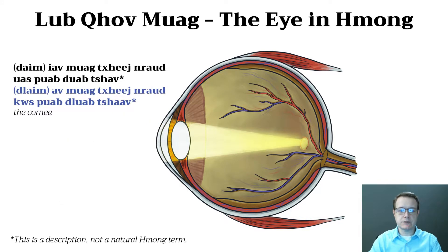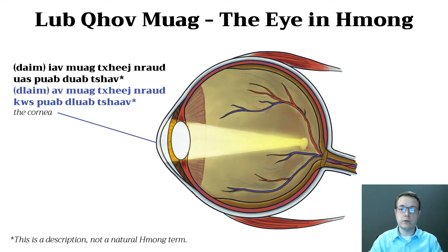Also not a natural term but a description: the cornea. That's a description of saying essentially that the glass or the lens — the outer lens that bends or manipulates the light.